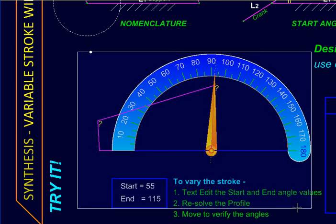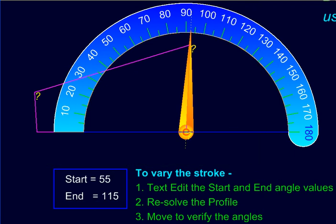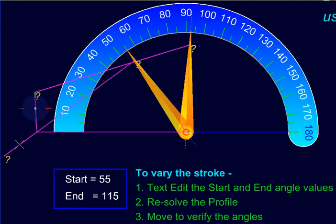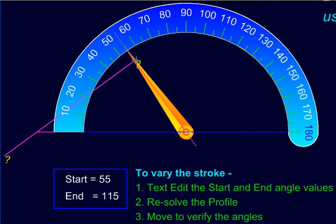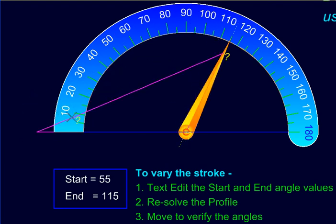So we are going to change the start and end angle values. We start with a configuration where the start angle is 55 and the end angle is 115. Let us verify that first. So on this side we have come up to 55. Starting there we will go right up to 115 as specified here.